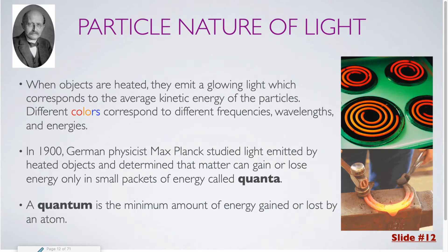When objects are heated, they emit a glowing light which corresponds to the average kinetic energy of the particles. Different colors correspond to different frequencies, wavelengths, and energies. You can see examples of this off to the right, where we have the heating coils on a stove and a horseshoe which is being heated. In 1900, German physicist Max Planck studied light emitted by heated objects and determined that matter can gain or lose energy only in small packets of energy called quanta.